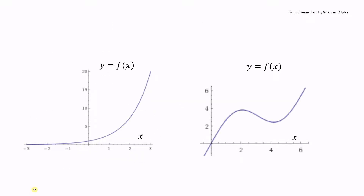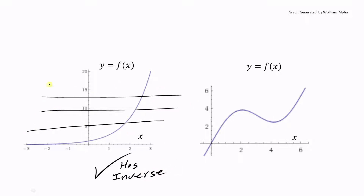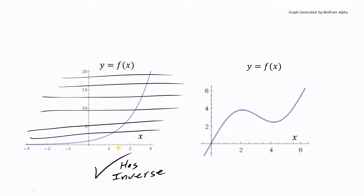Here are two functions — one has an inverse and one does not. The one on the left does have an inverse; it passes the horizontal line test throughout the graph. However, the function on the right does not have an inverse, because there is a certain area where a horizontal line intersects the graph at more than one point. So this has no inverse.